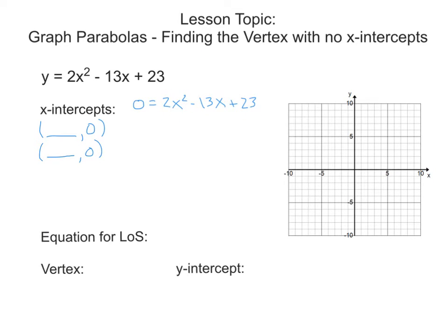I'm going to multiply a and c to get my ac term — my magic number — which is 46x squared. The factors of 46 are 1 and 46, and 2 and 23, and there are no others. Neither of those pairs will help me get negative 13 in the middle, so that tells us we can't factor, which means we need to use the quadratic formula.